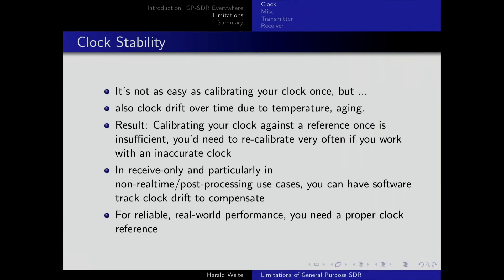The next point is stability of the clock. Calibrating the clock once to be precise is nice, but clocks drift due to temperature, aging, and all kinds of effects. You need to calibrate against a proper reference quite frequently, because it depends on how quickly it drifts from the calibration point. In receive-only use cases, you can handle this with fancy math and post-processing — you track the carrier clock and widen the window. But this only works because transmitters are required to be highly precise, so the receiver clock can drift while the transmitter remains at a fixed frequency. As soon as you start to transmit, particularly in the cellular area, you need this high-precision clock for both precision and stability.